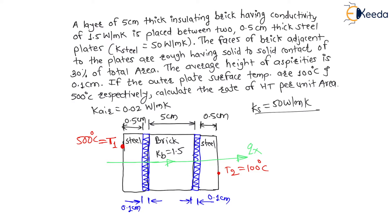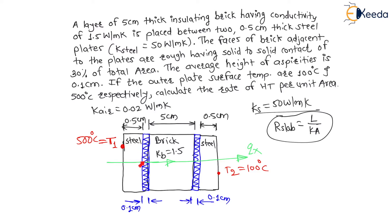Let us draw the equivalent circuit. The thermal resistance formula for a slab is R = L / (K·A). For the first steel plate of 0.5 cm, there will be resistance R1 between T1 and T3. In the 0.1 cm asperity region, there is resistance of brick and resistance of air in parallel.